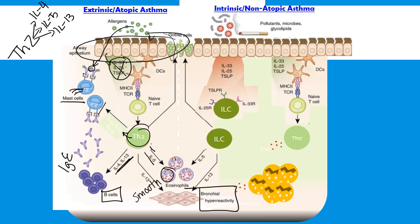All of these things together are how we get extrinsic atopic asthma. The eosinophil also produces things like neurotoxin, major basic protein, and eosinophil peroxidase, and those lead to actual structural damage to the lung cells and eventually airway remodeling. The allergic form of asthma is very well characterized.